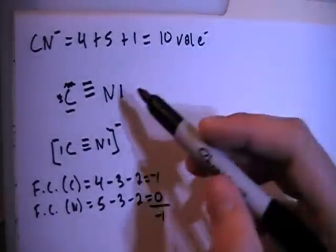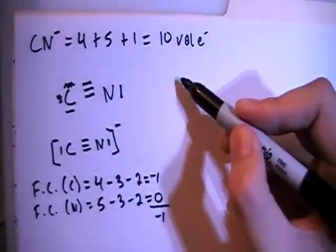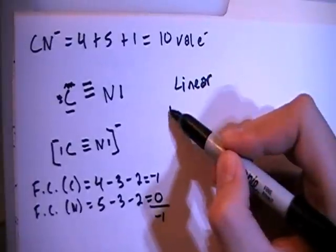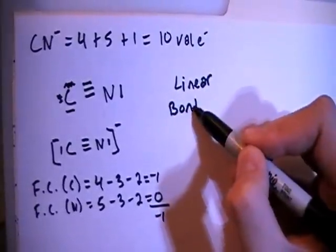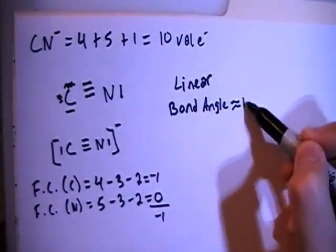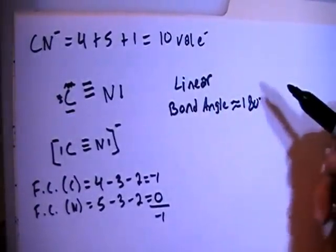So now we can talk about the shape real quick. Just having the two atoms, it's going to be a linear shape. And linear shape, the bond angle should be approximately 180 degrees.